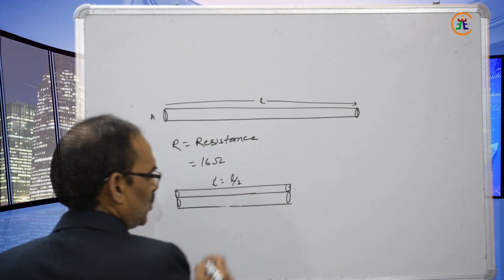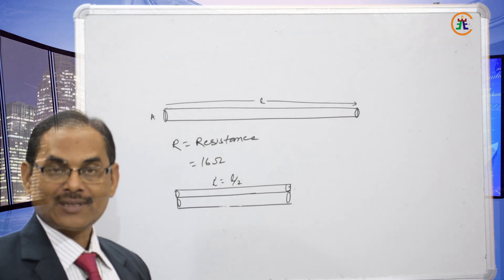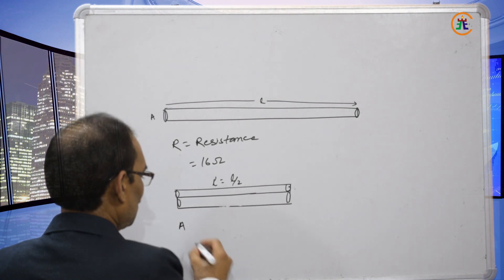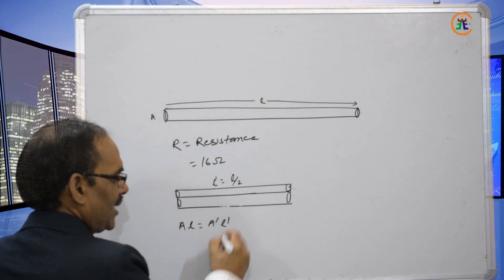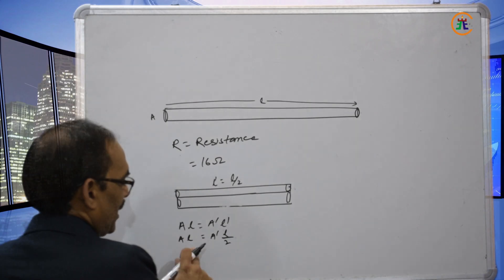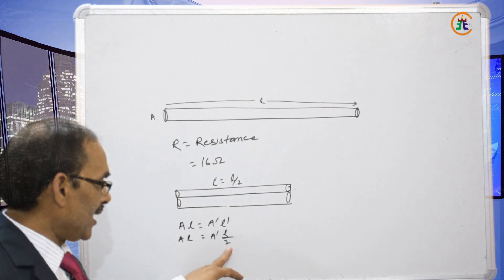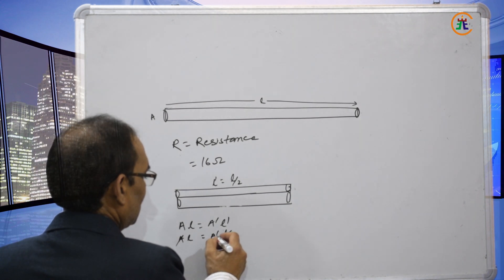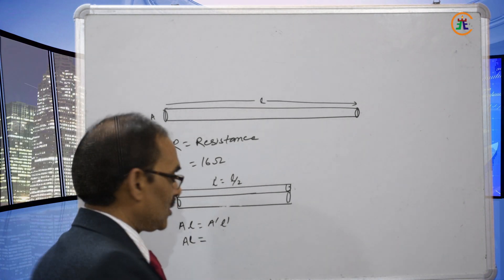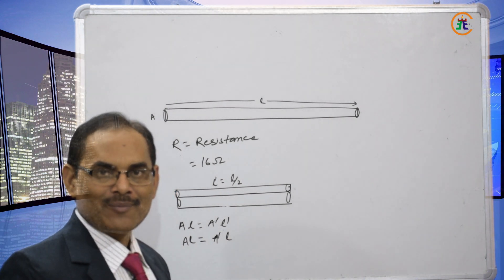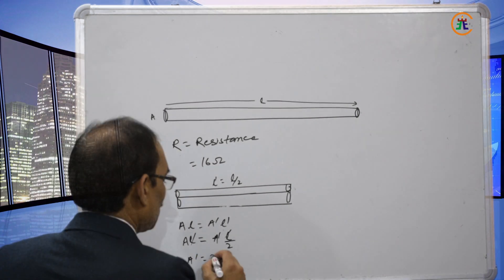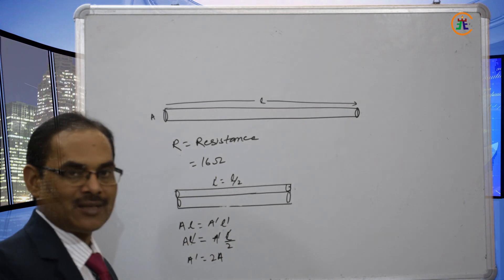Since the volume of the conductor does not change, A × l = A' × l'. The new length is l/2, so A × l = A' × (l/2). Solving, A' = 2A. So the new area of cross-section is double the original area, because the wire folds and the two halves sit alongside each other.